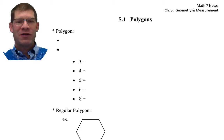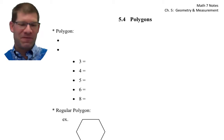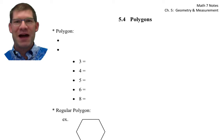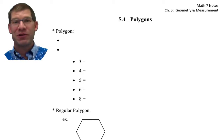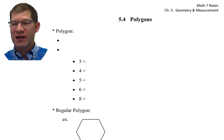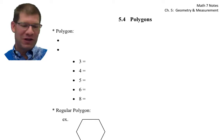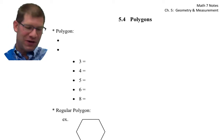Today we are doing chapter 5, section 4, which is polygons. It's a little bit shorter section after the really long one yesterday, so I think it'll be a little easier for you this time around.